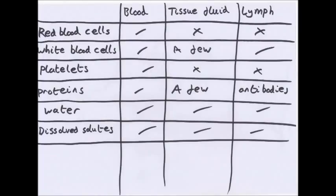Comparing what is contained in blood, tissue fluid, and lymph: blood contains red blood cells, but tissue fluid and lymph do not — red blood cells are too large to be squeezed out of capillaries. A few white blood cells can enter tissue fluid, and lymph naturally contains lymphocytes. Platelets and proteins are found in blood; only smaller proteins enter tissue fluid, and in lymph mainly antibodies. Water and dissolved solutes such as ions are present in all three.